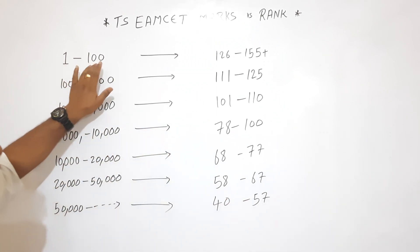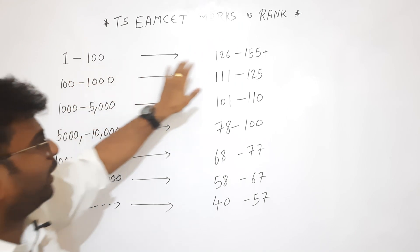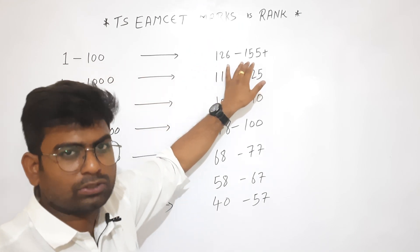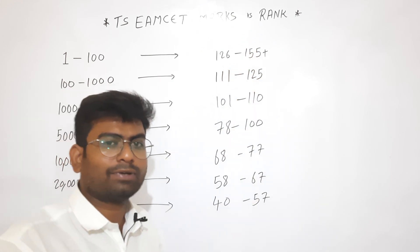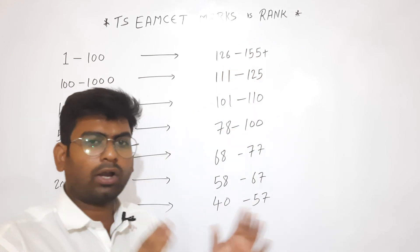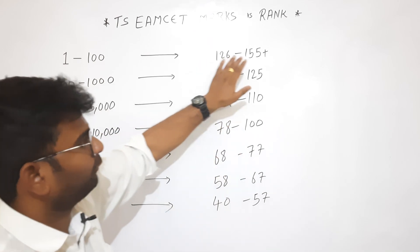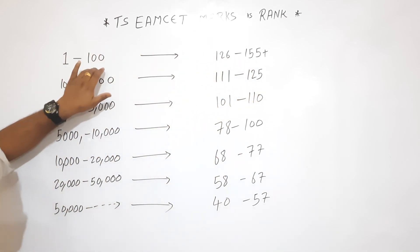So, 1 to 100 rank is 126 to 155 marks. Why is this variation? If the exam is tough, you will see the rank of the strengths. So on average, from 126 to 155, you are 1 to 100 rank.